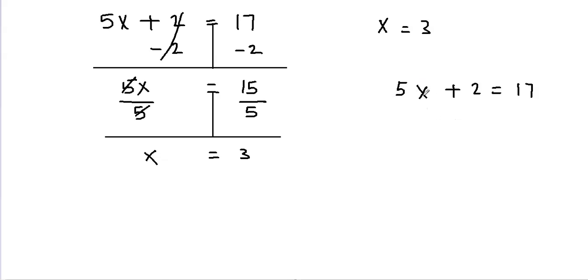If I plug in x equals 3 here, this should satisfy my equation. So this is 5x, so basically 5 times 3 and then plus 2 because I plugged in the value of x here. X is equal to 3 and then the remaining equation will stay the same.